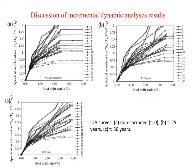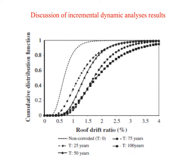The results of the incremental dynamic analysis obtained for the frame were compared as a function of the time-dependent damage in the reduction of the performance levels. The figures here show the incremental dynamic analysis curves of spectral acceleration versus the roof drift ratio of the frame as a function of time. As shown in these figures, the roof drift ratio increases for the same amount of spectral acceleration with increasing time. To better understand the changes in the roof drift ratio, the cumulative distribution function of the roof drift ratio must be constructed for each time period.